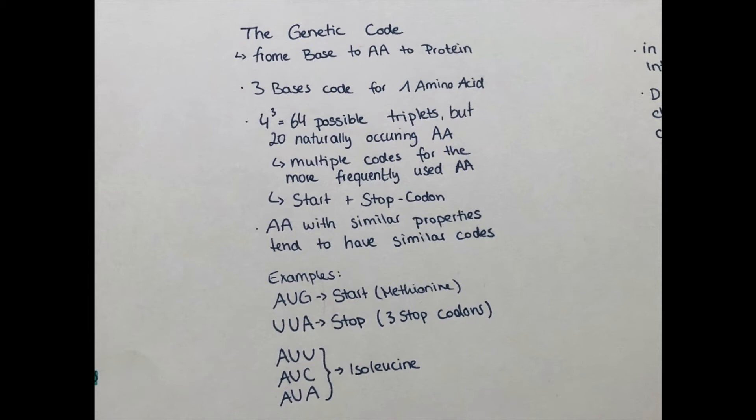As you can see on the poster, for example, isoleucine has three different codons. And also amino acids that have a similar property usually tend to have similar triplet codes, so that even though the cell maybe makes a mistake in the amino acid configuration, the property will be so similar that the protein is still functioning.